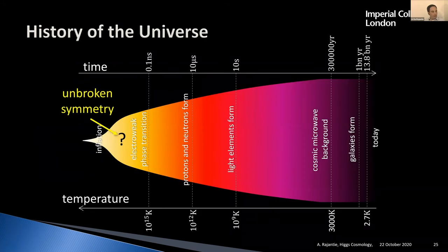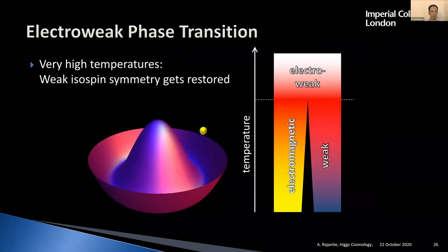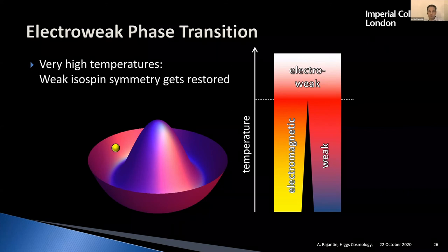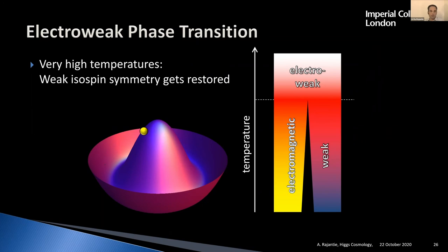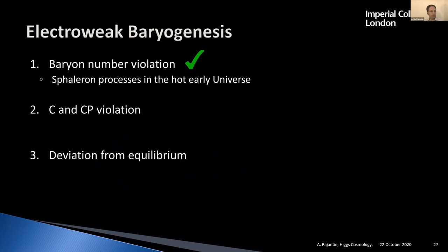In the early universe, temperatures were extremely high — very high numbers of Kelvin — meaning lots of energy was available. The Higgs field was able to jump over this barrier freely. That's why baryon number was not conserved in the early universe: the number of particles versus antiparticles was not conserved, and matter particles could be created and destroyed. So condition one — baryon number violation — was satisfied in the early universe.